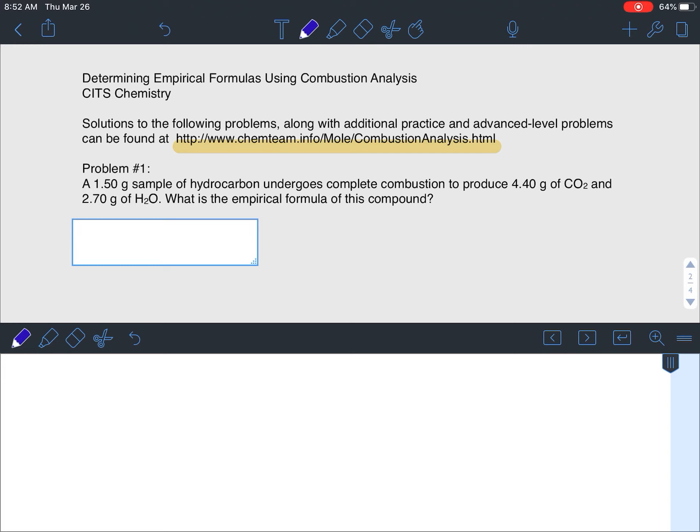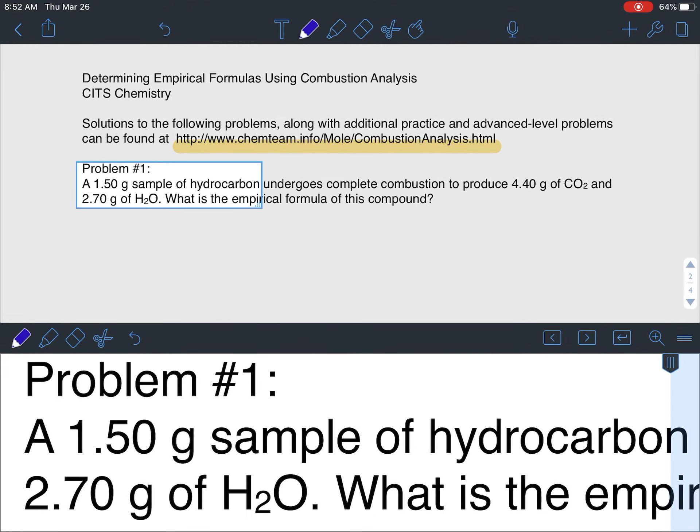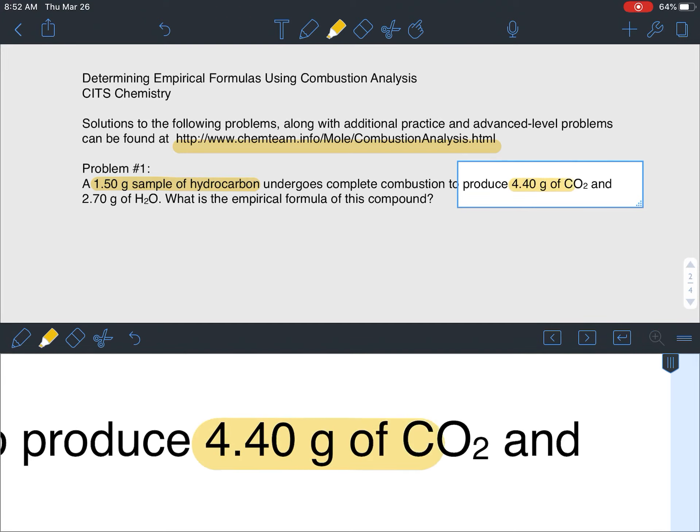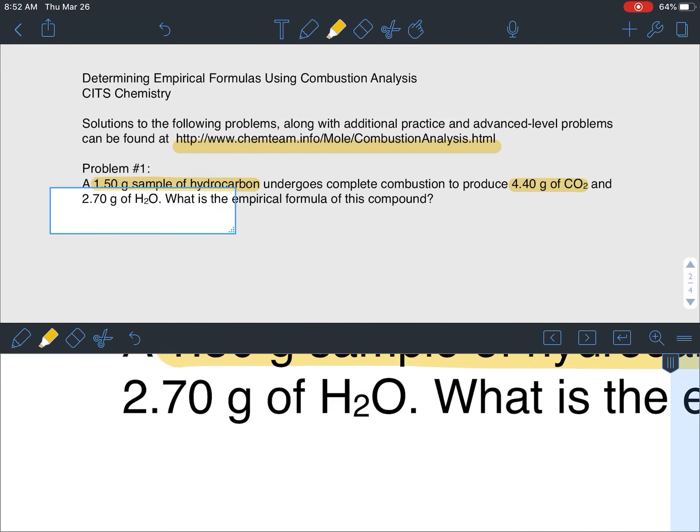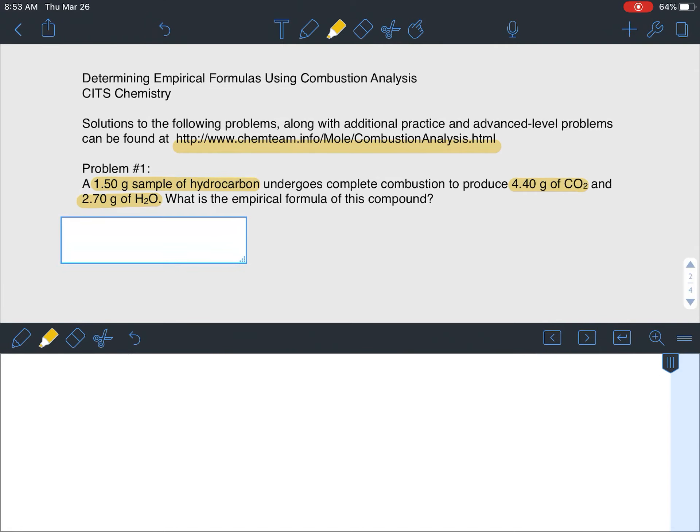Taking a look at this first example, we have a 1.5 gram sample of a hydrocarbon. That hydrocarbon, that's our original sample mass, so this is before it's burned. It undergoes complete combustion to produce 4.40 grams of CO2 and 2.7 grams of water. What is the empirical formula of this compound? It's a hydrocarbon, basically telling us that we have hydrogen and carbon. There could potentially be oxygen in this compound, and we'll know that for sure once we are done when we add up the masses of the carbon and the hydrogen.